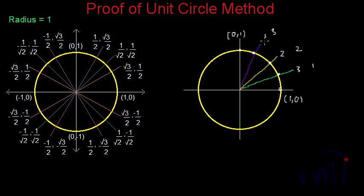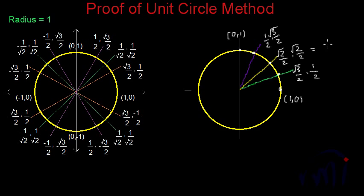Then we divided all these numbers by 2 and took the square root of the numerator. So square root of 1 was 1, square root of 3 will be √3, this became √2 and √2, and this became √3 and 1 itself. This got modified to 1/√2 and 1/√2.